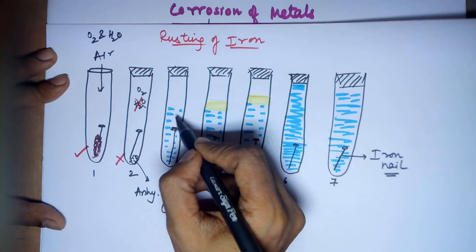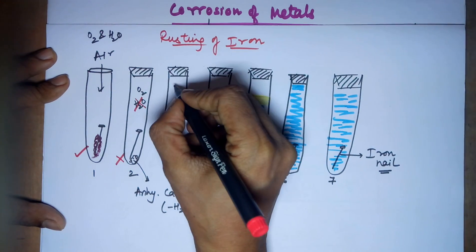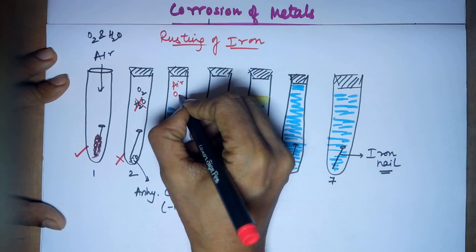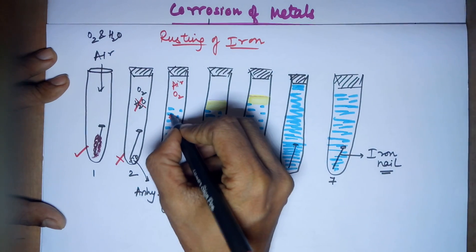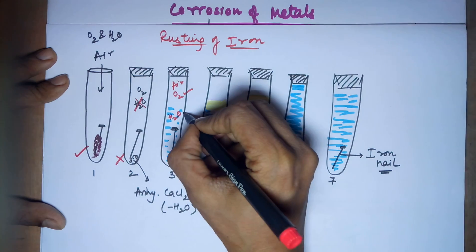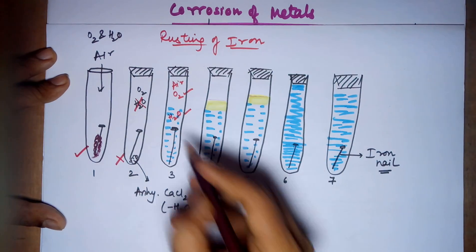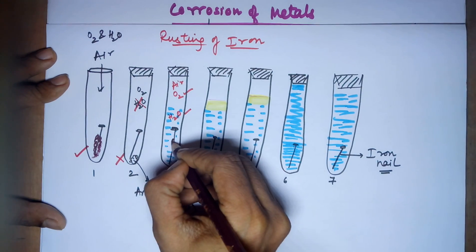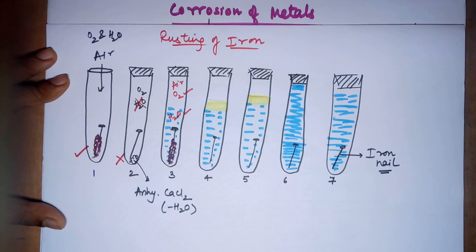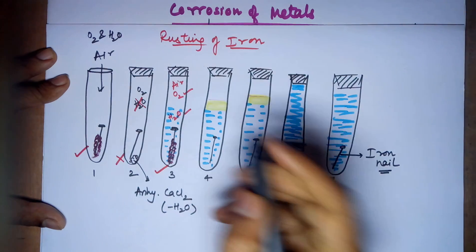In test tube three, the test tube is half filled with water and half left empty. Since half is open, you have air, which means you have oxygen. Water has also been added. So since you have both water and oxygen, it is observed that this also undergoes rusting — test tube three has rusting taking place.